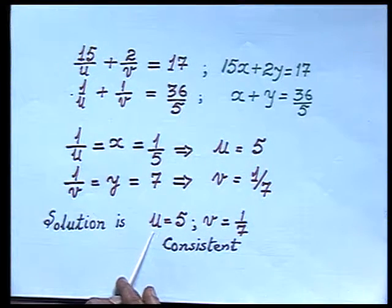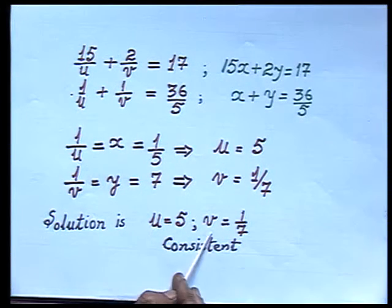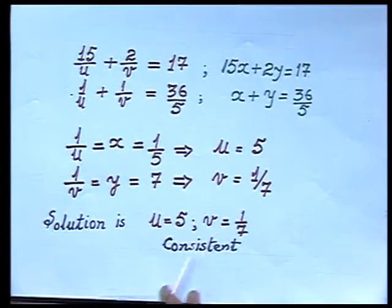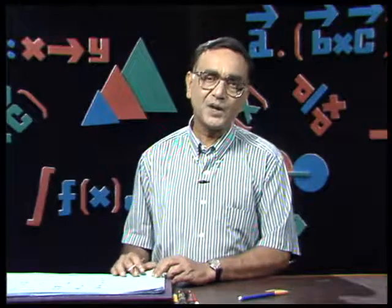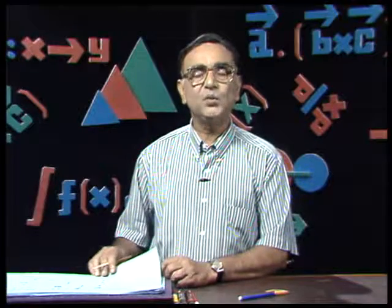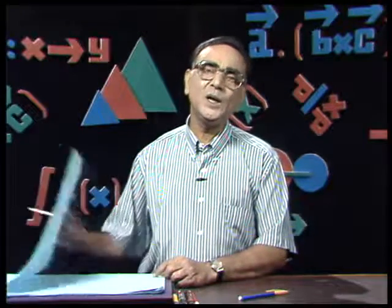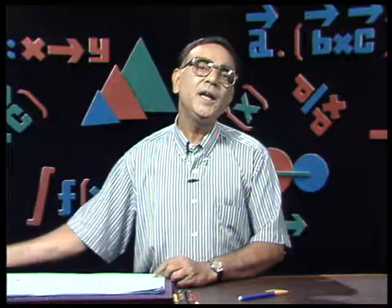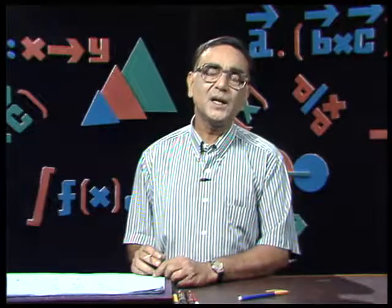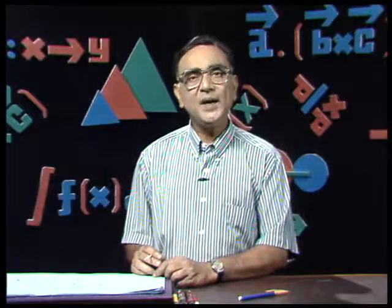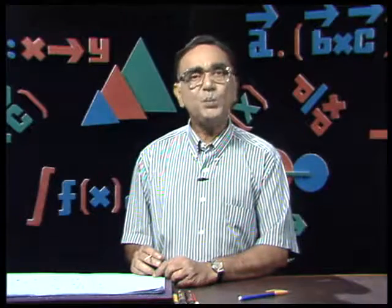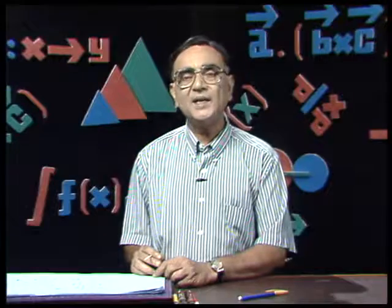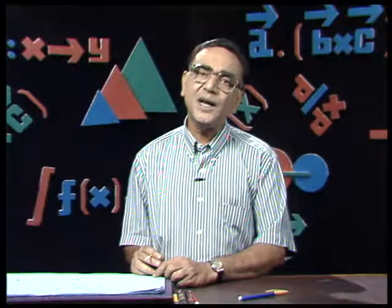Since we are getting a unique solution — unique values of u and v — this system is a consistent system. In this method, what we learnt is: to get the values of the variables, we equate the coefficients and then solve for the other variable. Prior to doing that, we decide which variable we want to eliminate.